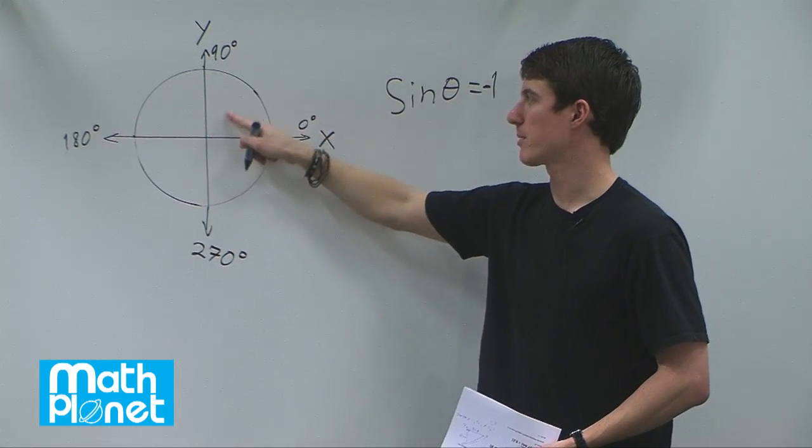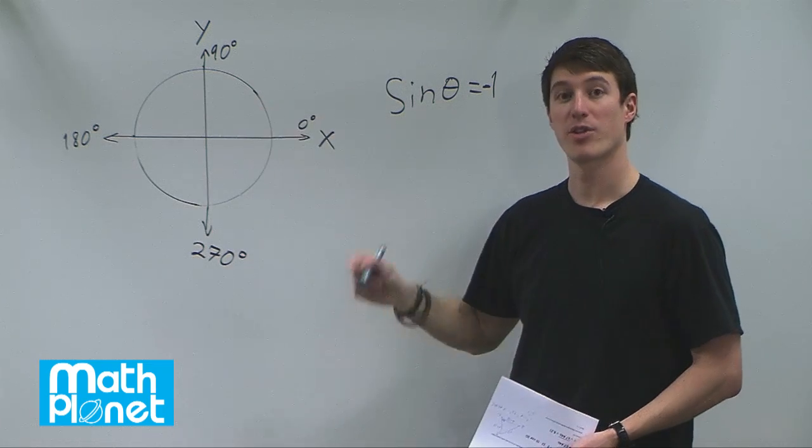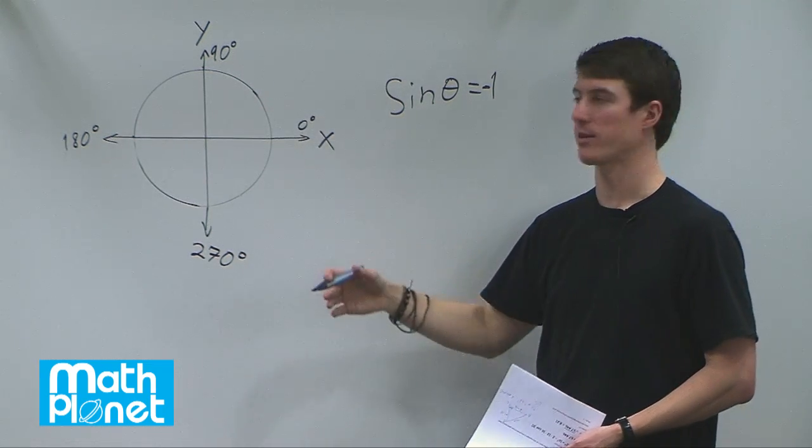When we talk about the opposite side, we're talking about some triangle where we're referring to this side—the height. So when we think of sine in the unit circle, we think of height.